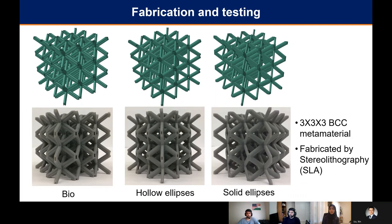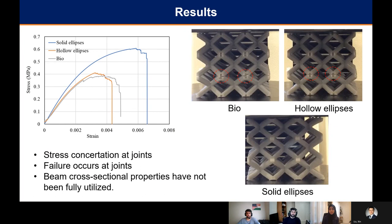Based on the cross-sectional designs, we manufactured and assembled the BCC metamaterial using an SLA process — essentially 3D printing the figures we designed — and then used them for testing. The results showed that there is too much stress concentration at the joints, causing failure there, which is why we cannot use the beam cross-sectional properties to their full utility. We recommend reinforcing the joints so that we can use the beam cross-sectional properties to their fullest. Thank you.